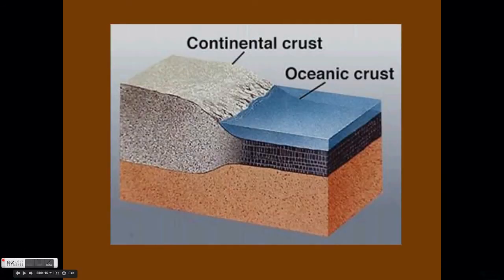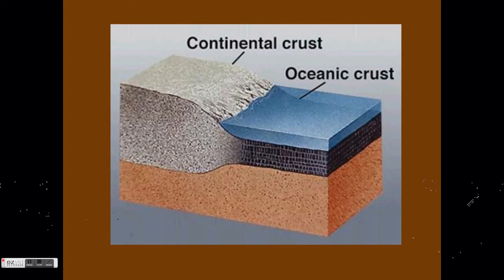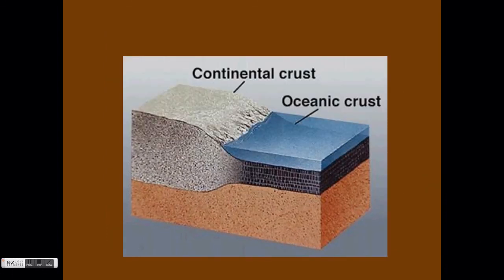There are actually two types of tectonic plates: continental and oceanic. Oceanic plates are thinner and made up of recently cooled magma that has risen to the surface and turned into rock. These plates are made up of newer rock and they are mostly covered by oceans. Continental plates are thicker and made up of older rock. They are mostly covered by land masses.